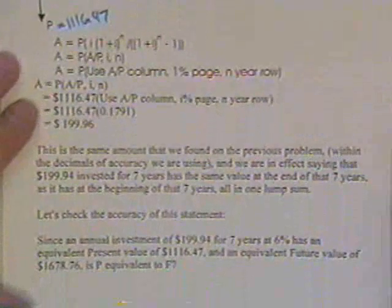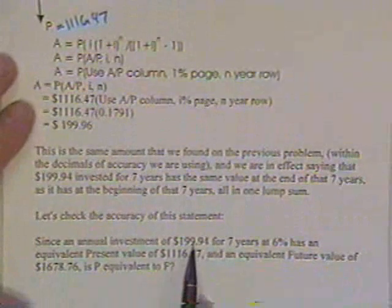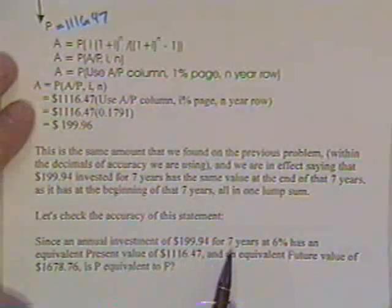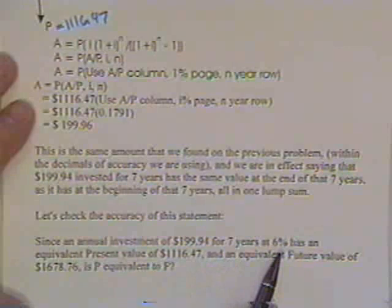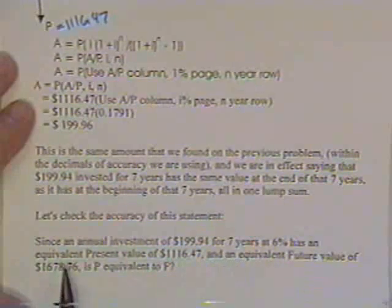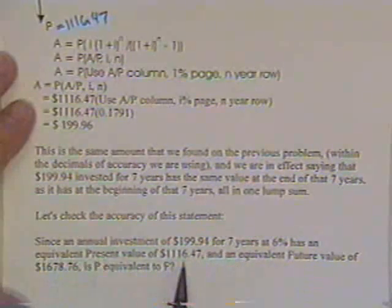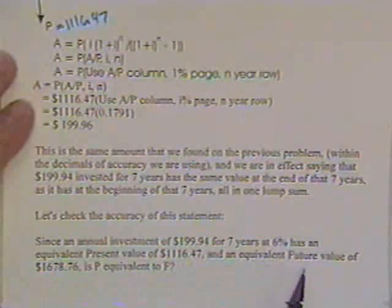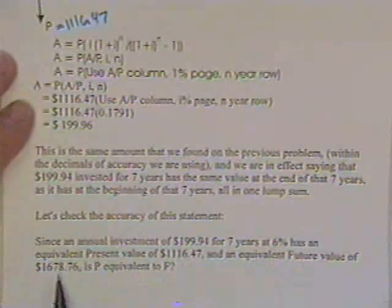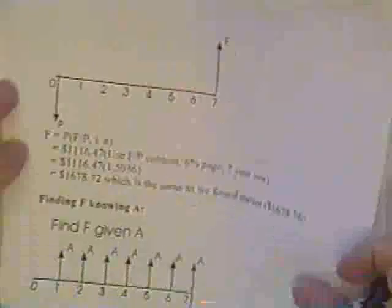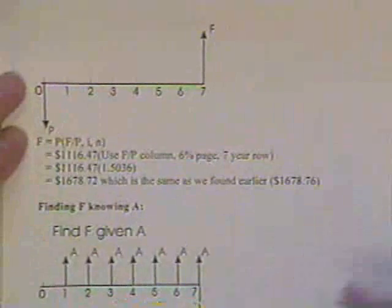What we're saying is, is that an annual investment of this for seven years at 6% has an equivalent present value of this and an equivalent future value of this looks like P ought to be the same as F. In other words, it looks like that.